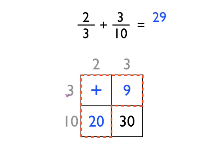And that's actually the numerator, the top number in the fraction of your answer. So 20 add 9 is 29. So I put the 29 in the numerator, the top number of the answer.